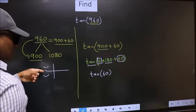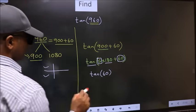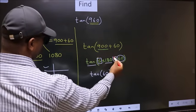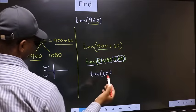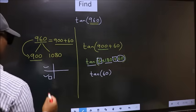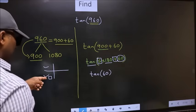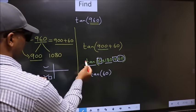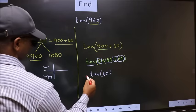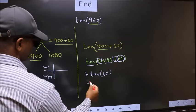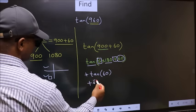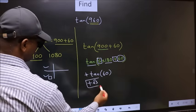So now to select the quadrant, we should look at this symbol. Here we have plus. That means the angle lies in the third quadrant. And in the third quadrant, tan is positive. So we should put plus. So plus tan 60 is root 3. This is our answer.